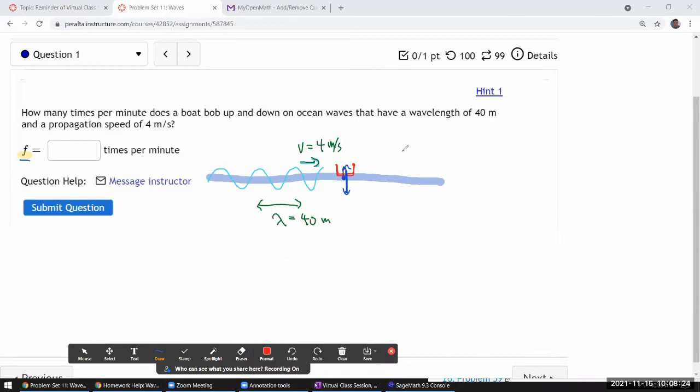This is the relationship between wavelength, frequency, and wave speed. Wave speed is given by frequency times wavelength.